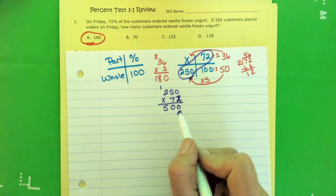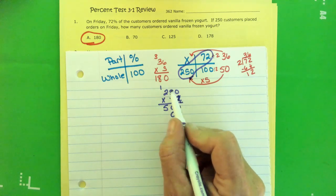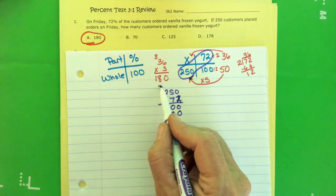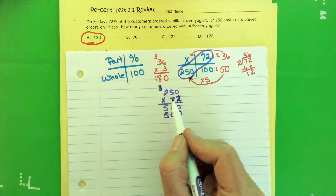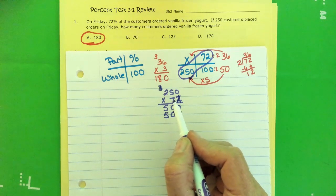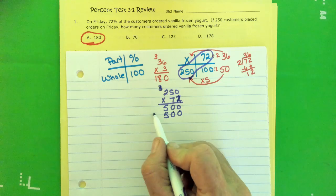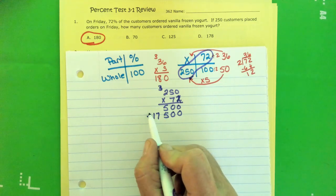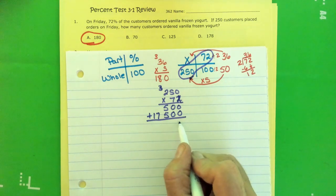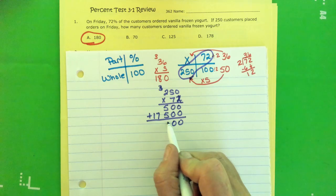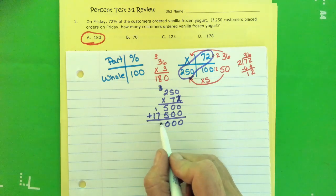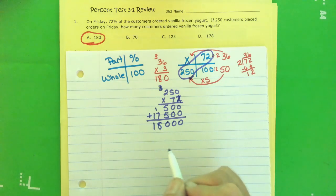Seven times zero is zero, seven times five is 35, carry the three. Two times seven is 14 plus three, 17. Now when I add these together, I get 18,000. Then that's cross multiply. Then I have to divide by what's left over, which in this case is 100.